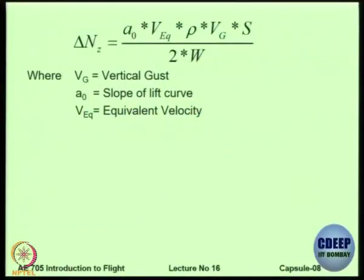The additional load factor that will come is delta L which is equal to half rho V square. The W on the denominator is because of NZ, it is L upon W. What we have done here is we have used A0 is the lift curve slope.